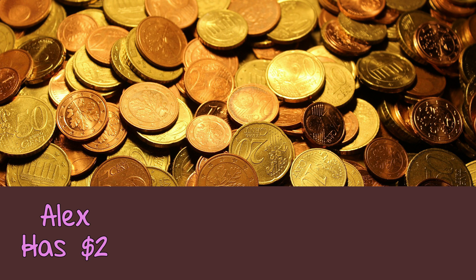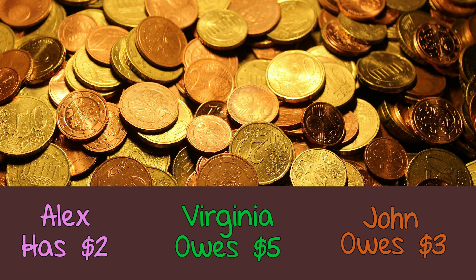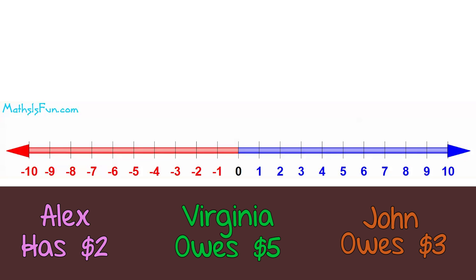Another example. Alex has $2 in his pocket, but Virginia owes $5 to her friend and John owes $3 to his dad. Place these people on the number line to find who is poorest and who is richest.